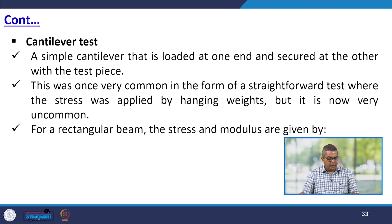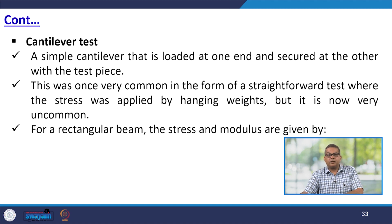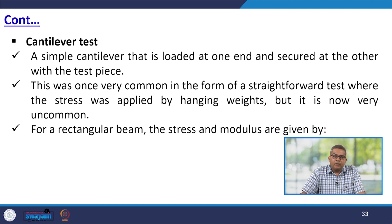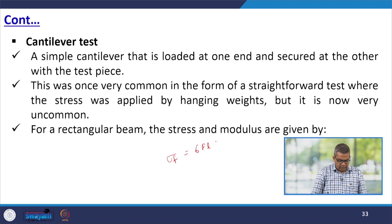Now let us talk about the cantilever test. A simple cantilever test is carried out by clamping the test piece at one end and loading it at the other. This is only a common way in the form of a straightforward test where stress was applied by a hanging bead, but it is now very uncommon. For a rectangular beam, the stress and modulus are given by: σ_f = 6FL/(b·h²) and E_f = 4FL³/(b·h³·S).